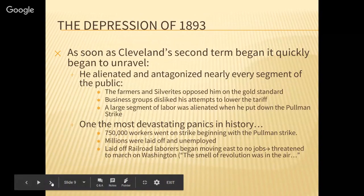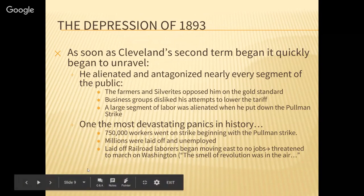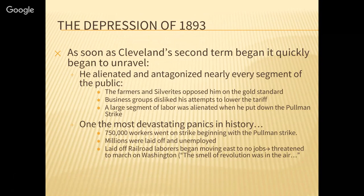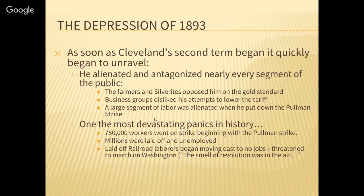The depression of 1893: the biggest political issue of the 1870s and the 1890s — the two decades which feature a bust cycle — is going to be the issue of currency, the value of currency. The story of the 1890s is going to be a story of currency. In 1893, we're going to find a lot of economic discontent in America. 1893 — one of the most devastating panics in history.